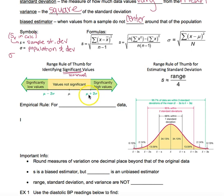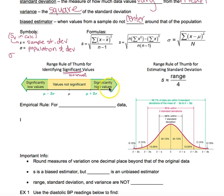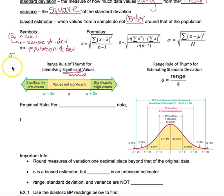Values that are more than two standard deviations above the mean — that's mean plus two standard deviations — we call significantly high. Values that are more than two standard deviations below the mean — mean minus two standard deviations — would be significantly low.